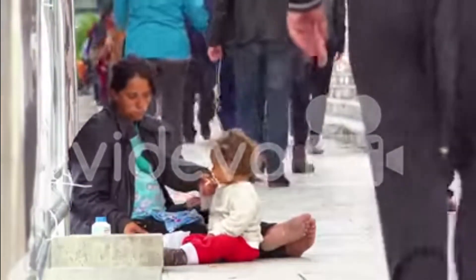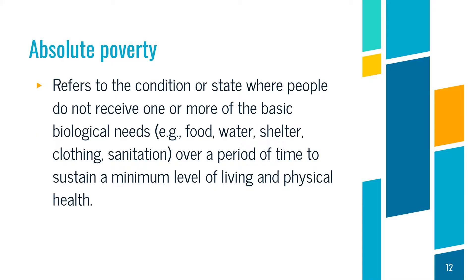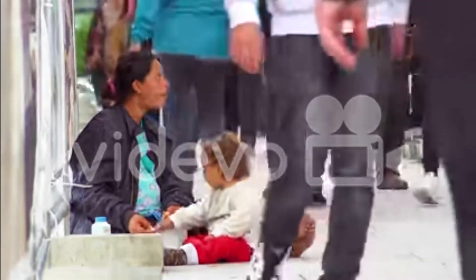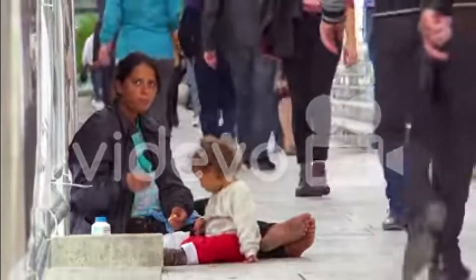Poverty has two main types: absolute poverty and relative poverty. Absolute poverty refers to the condition where people do not receive one or more of the basic biological needs — food, water, shelter, clothing, and sanitation — over a period of time to sustain a minimum level of living and physical health. For example, if you are hungry but cannot feed yourself, or need decent shelter but have none, that is absolute poverty.